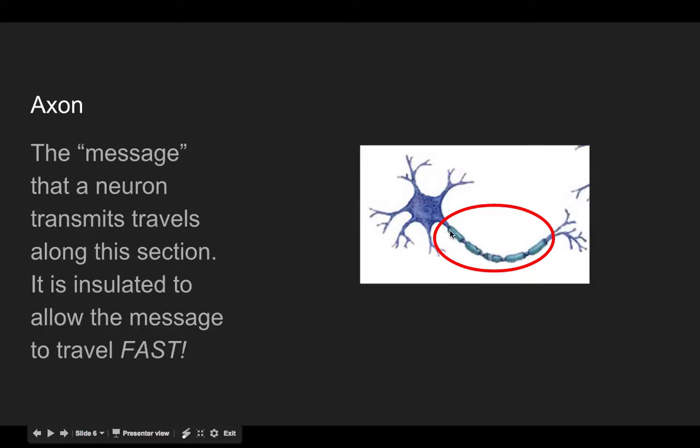You've got the axon, which again is this long, slender section. The cell body may say, okay, we received a message up here. And the cell body interprets that and says we need to send a message down. And then this is where the message would travel down. Those videos that are on the Padlet will give you more information about what exactly that message is.